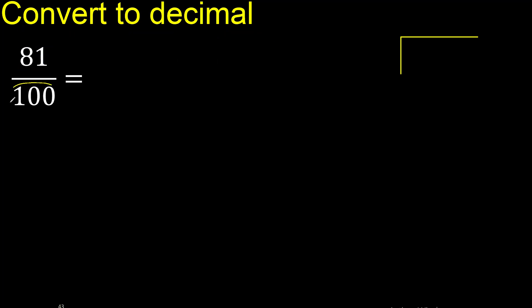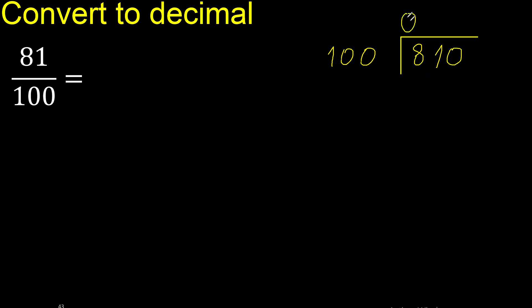81 divided by 100. 81 is less, therefore always complete with 0. Here, 0 point is not less.